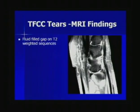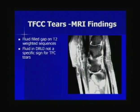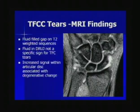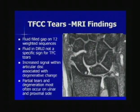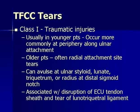On a sagittal image you can see a large fluid-filled gap within the articular disc. Fluid within the distal radio-ulnar joint is not a specific sign for TFC tears, and there can be a small amount physiologically. Increased signal within the disc is often associated with degenerative change. Partial tears and degeneration occur most often on the ulnar side and proximal side of the TFCC. Traumatic injuries tend to occur along the periphery at the ulnar attachment in younger patients, and at the radial attachment site in older patients. They can involve a piece of bone at any attachment site and can be associated with ECU tendon sheath disruption as well as lunotriquetral ligament tears.